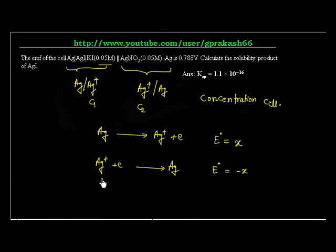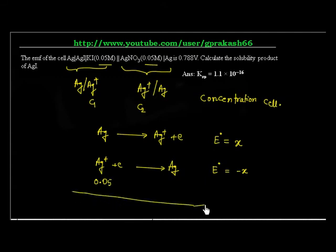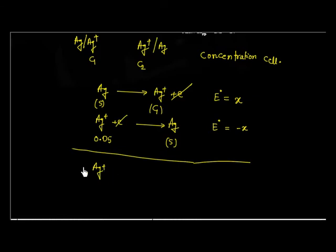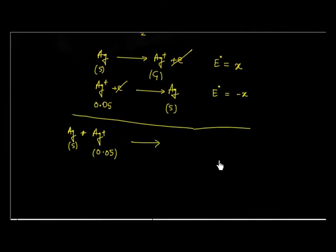Now on this side, if this value is X — that is Ag to Ag+ — then this value has to be minus X. The concentration of Ag+ is 0.05 on this side because it is 100% soluble. Now let us add these reactions. Electrons cancel out and we are left with Ag+ at concentration C1 on the left and Ag+ at concentration 0.05 on the right, with Ag solid on both sides.